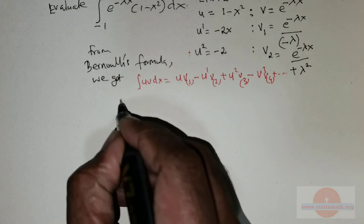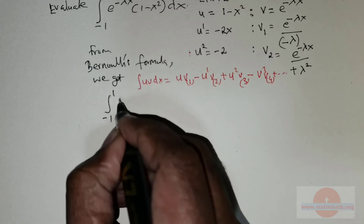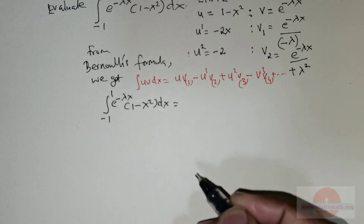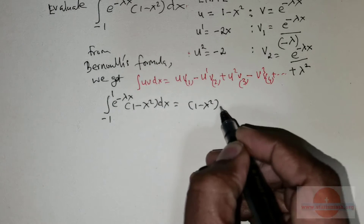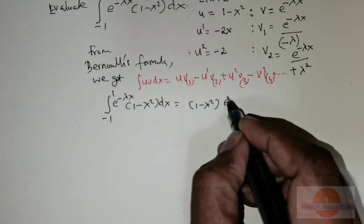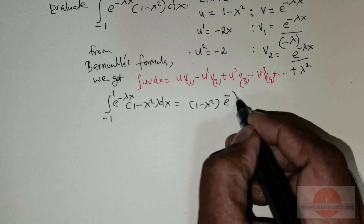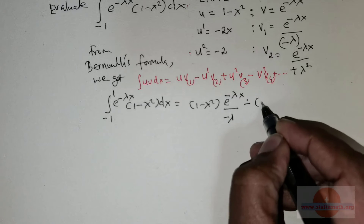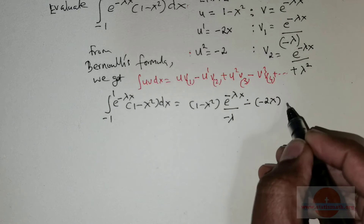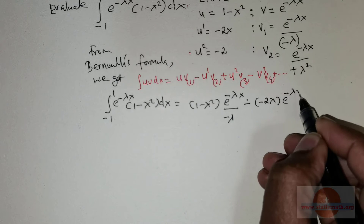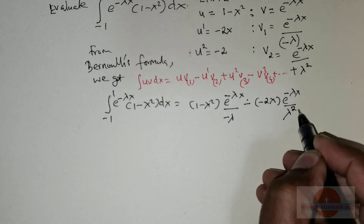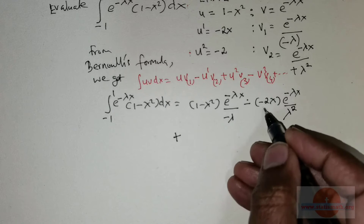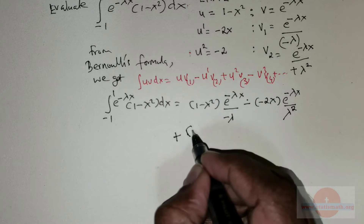Using Bernoulli's formula, the integral from negative 1 to 1 of e to the power negative lambda x times 1 minus x squared dx can now be rewritten as: in the place of u, we have 1 minus x squared; in the place of v₁, we have e to the power negative lambda x divided by negative lambda; followed by a negative sign, and in the place of u₁, we have negative 2x. v₂ is e to the power negative lambda x divided by lambda squared.